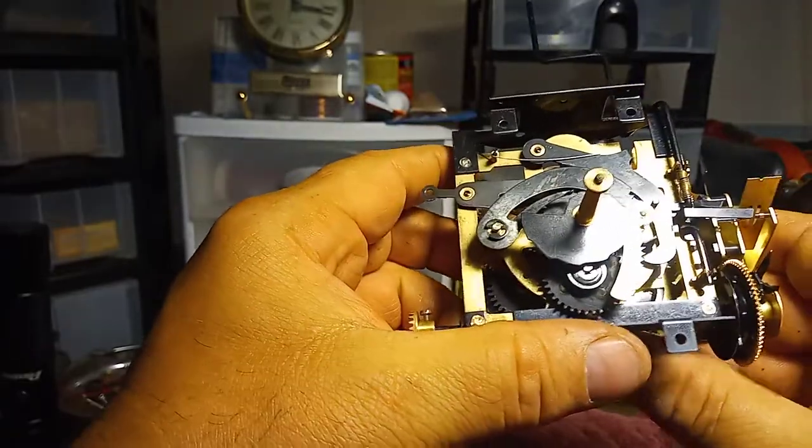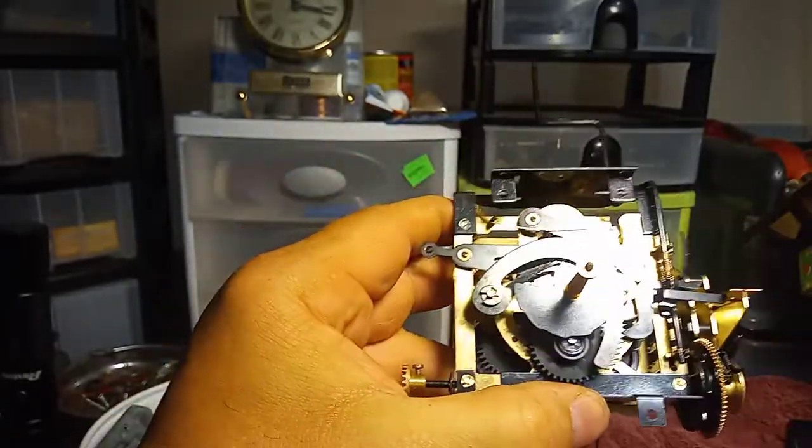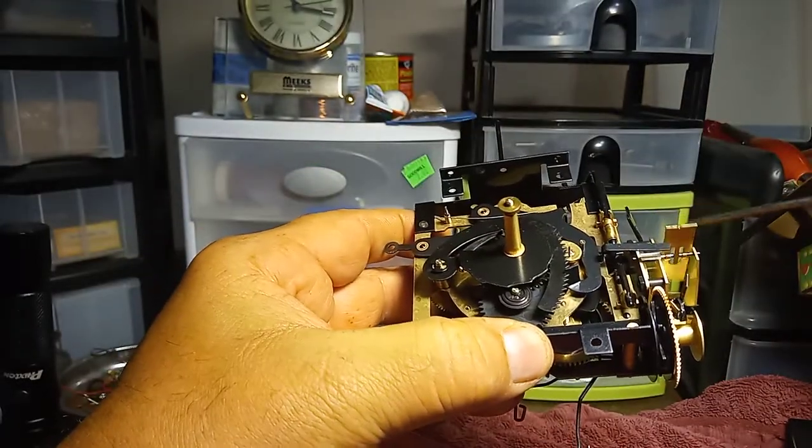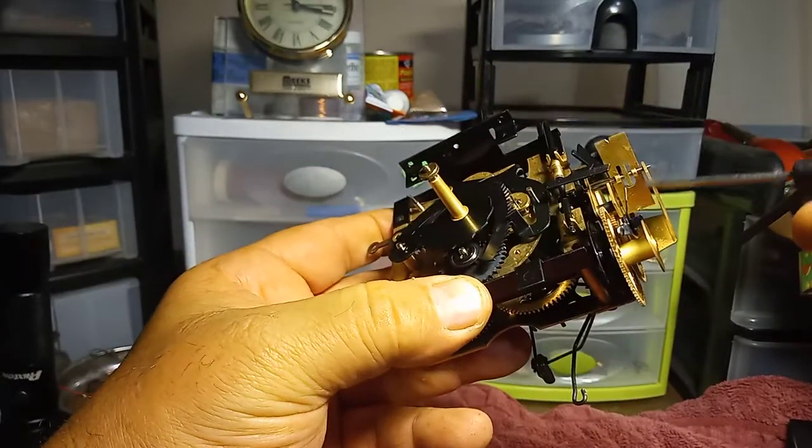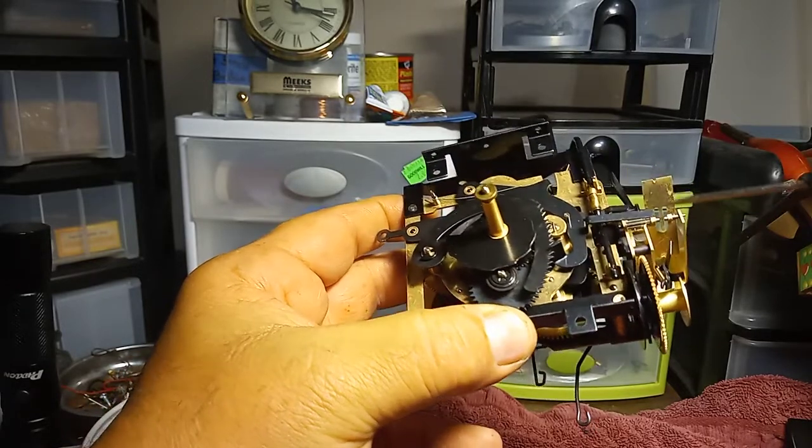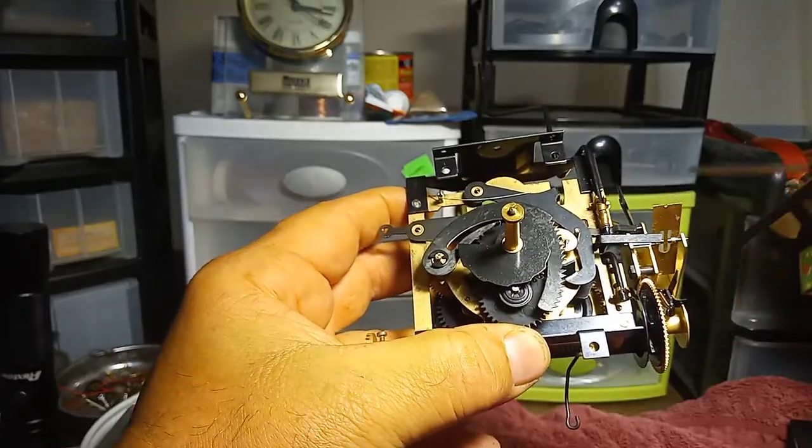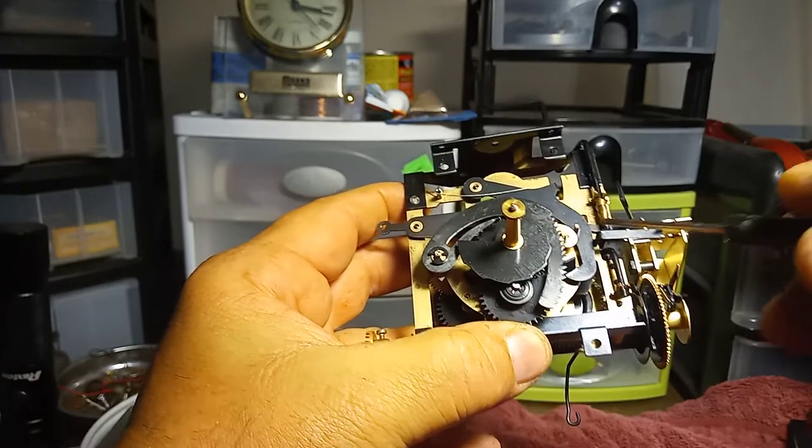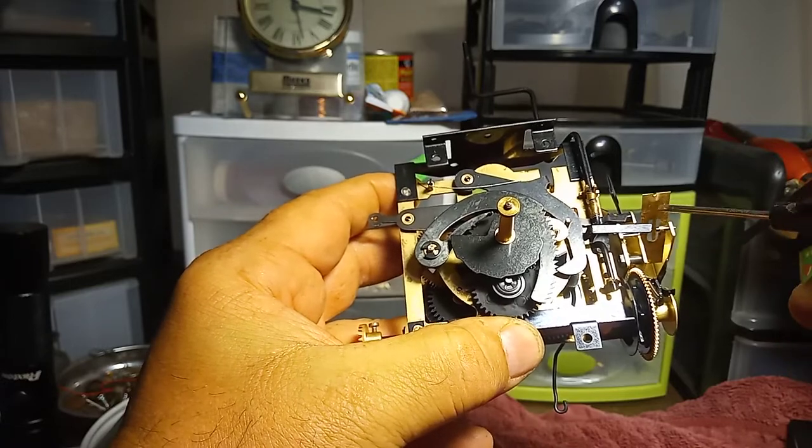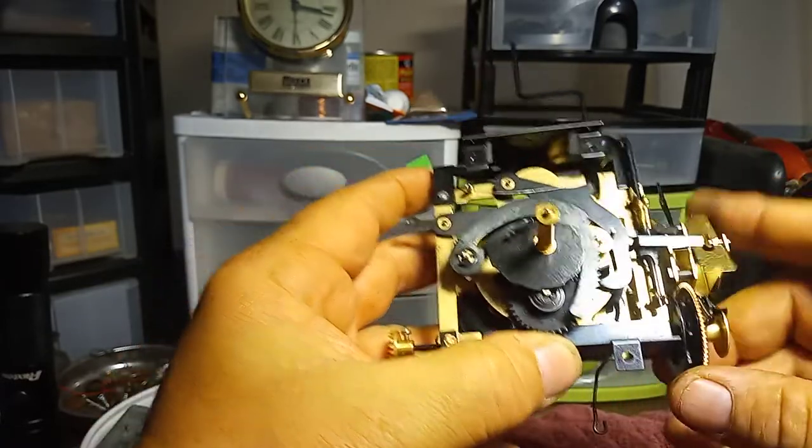When the cuckoo is done doing its thing, this lever right here stops the governor fan from turning on this contraption for the East Meckenbecker movements. When it's done cuckooing, this lever is going to drop out of the way so the governor fan can spin.